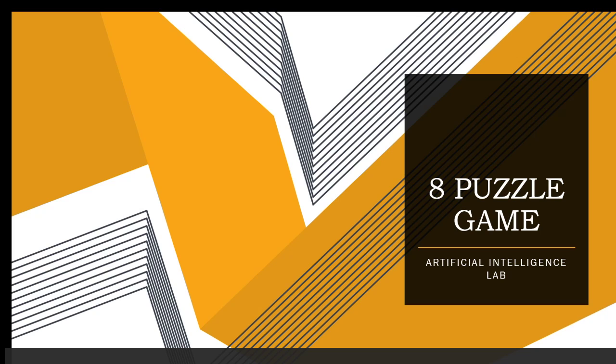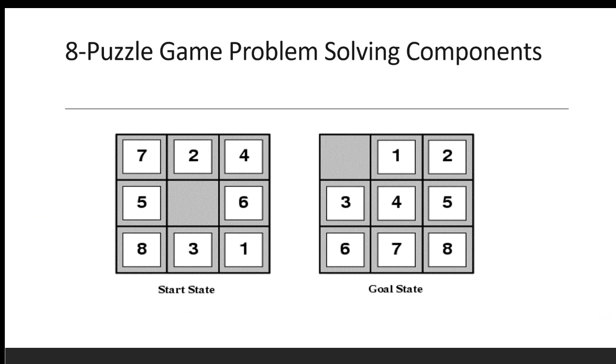So, 8 puzzle game - you have 9 tiles: 1, 2, 3, 4, 5, 6, 7, 8, and 1 blank. You have a start state, you move tiles, and you have a goal state. You have to achieve the goal state from the start state. You have many possible conditions, you have to move tiles, so you have to understand those possible actions and what you have to do to reach the goal state.